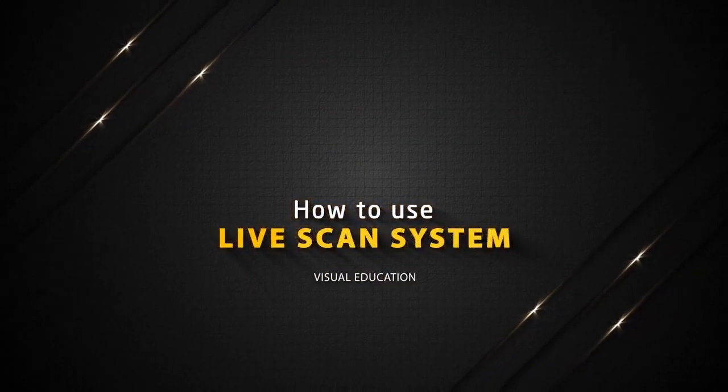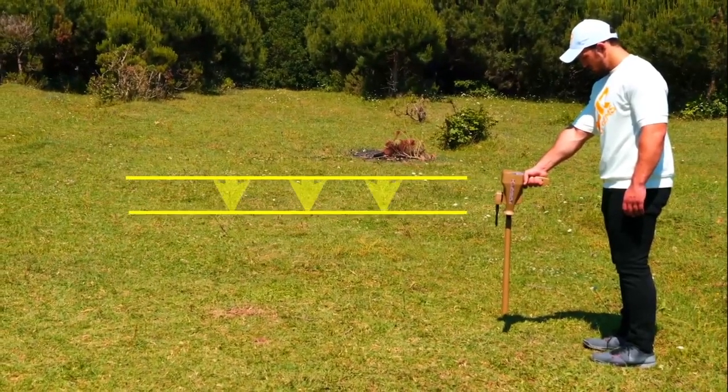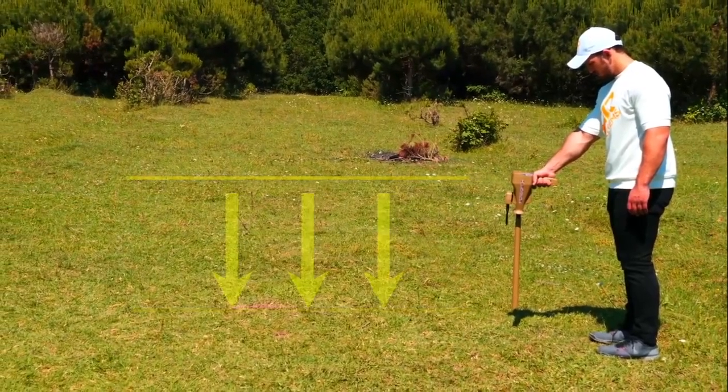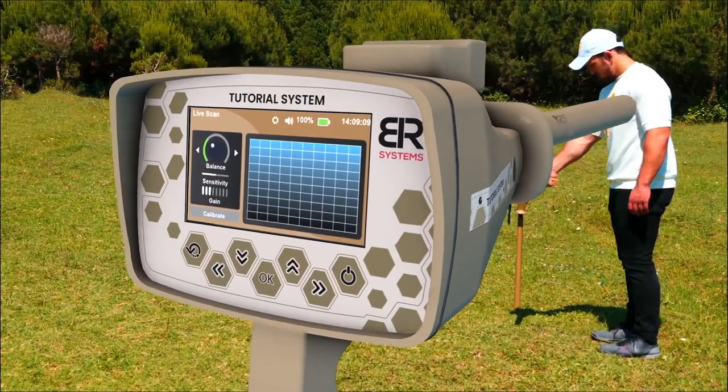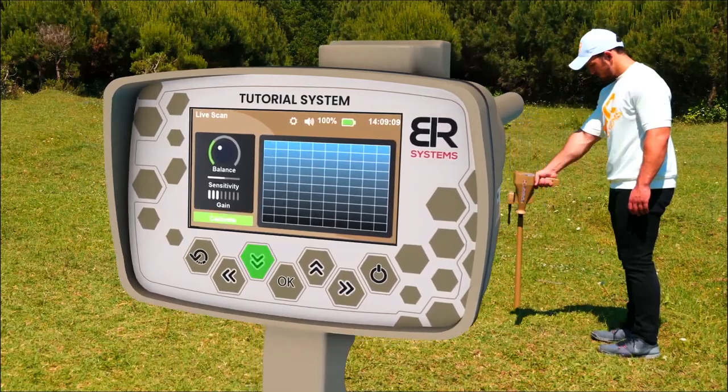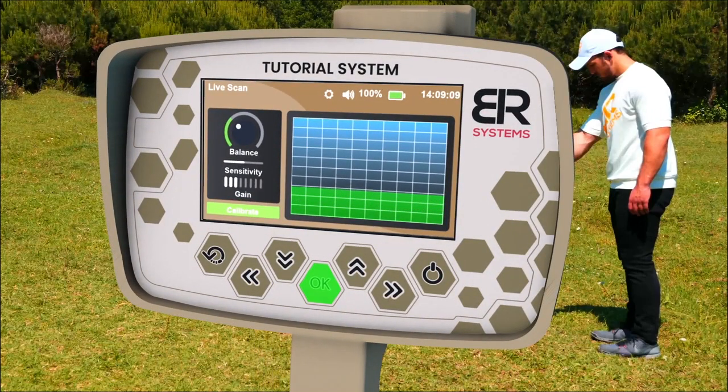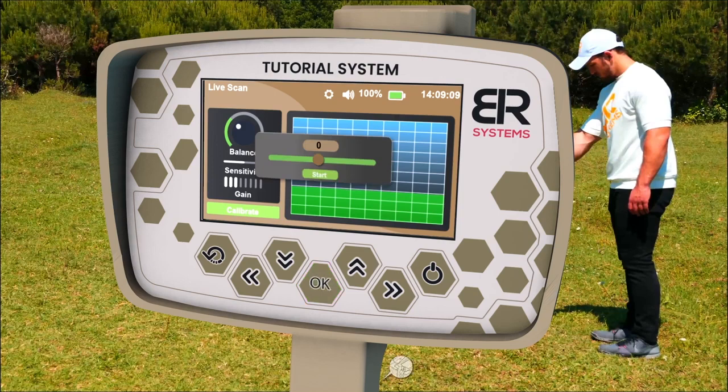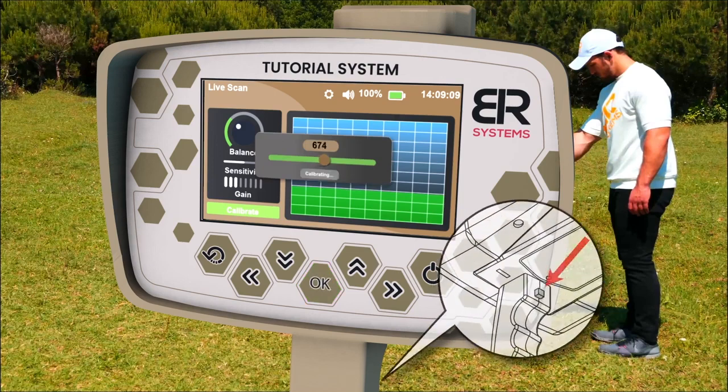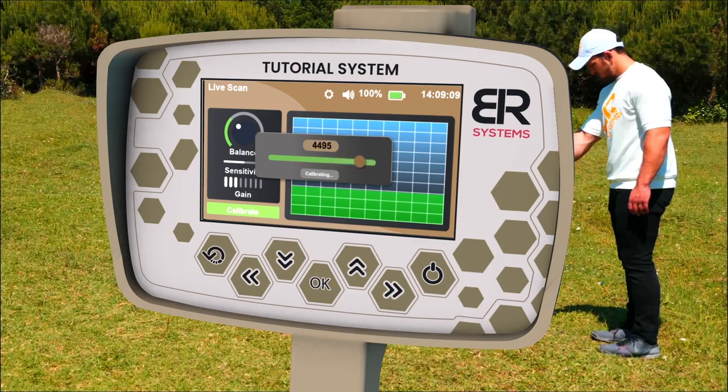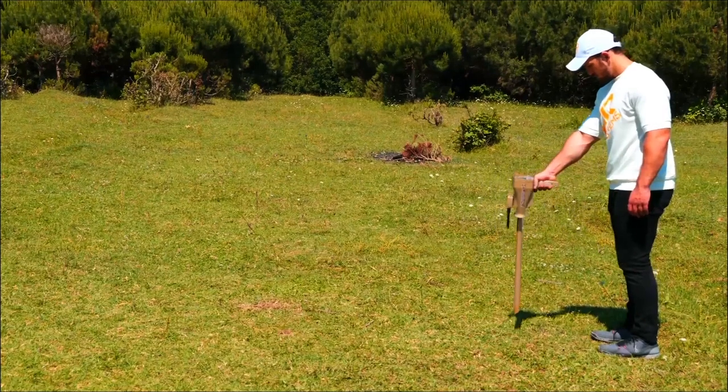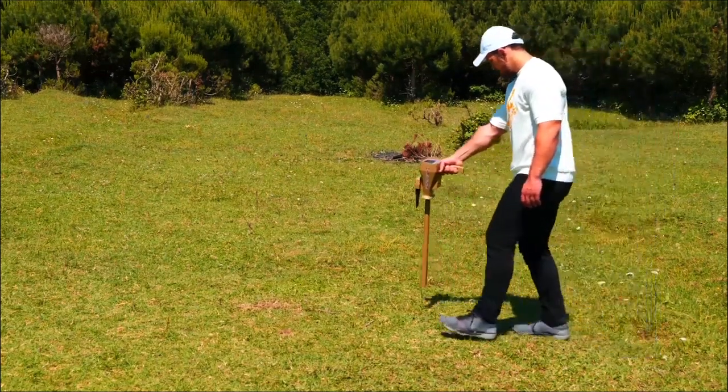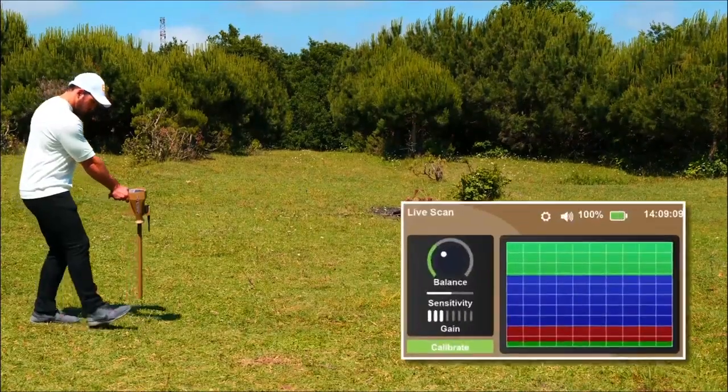How to use live scan system. Hold the device perpendicular to the ground. Choose the calibration icon from the system screen interface. Press OK to enter the calibration system. Press the handle button to start the calibration process. Wait for the system to finish balancing the device. A message will appear that shows the calibration process has been completed. Keep the device vertical and move forward and follow the color changes within the mesh window.